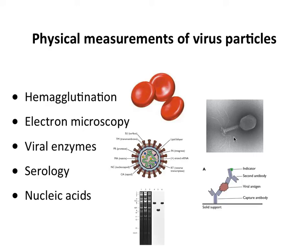Electron microscopy involves taking photographs of viruses at very high magnification. It's useful for looking at new viruses you're discovering to see what they look like. It also lets you count how many physical particles are present in a sample. For example, if you've discovered a new virus and want to know the particle-to-PFU ratio, you have to examine it under the electron microscope.